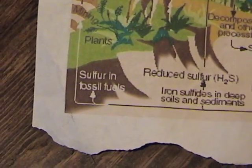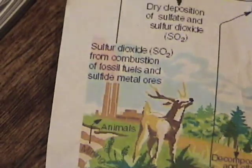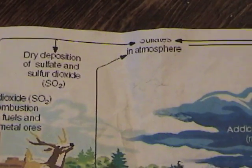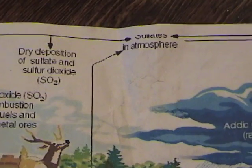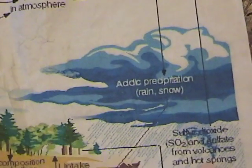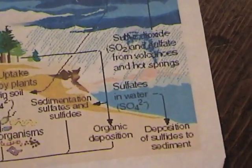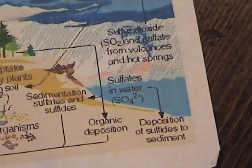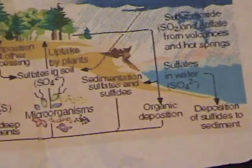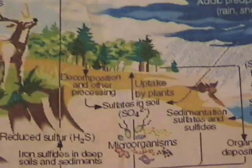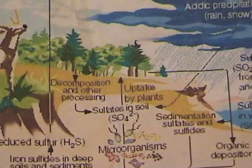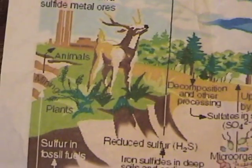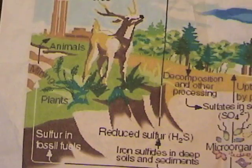To sum it all up: sulfur in fossil fuels is used by factories and automobiles, which sends sulfur into the atmosphere through combustion. This also occurs through volcanic eruptions. Sulfur in the atmosphere then falls down to earth through acid precipitation. It goes down to the bottom of the ocean, which takes thousands and thousands of years, and collects as sediment. This sediment, which is also spread to the soil through microorganisms, is taken up by plants through their root systems. Plants, and also in turn animals, obtain the sulfur and spread it back into the earth through defecation or decomposition.